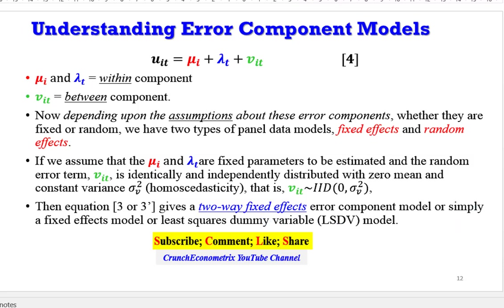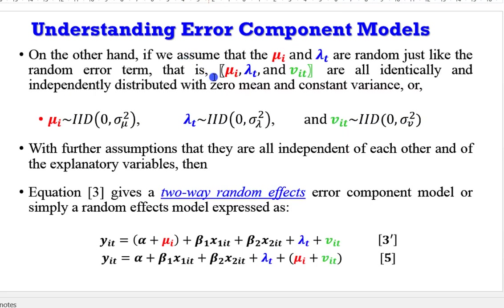On the other hand, if we assume that all these compositions of the error term are random, then that means we are going to have a two-way random effects error components model. And equation 3 prime, which I showed you before, can now be rewritten as equation 5, whereby the individual differences now in the model is now added in composition to the random error term, because of the assumption that is being made about the disturbance uit. So, given the assumption of the random error term, will determine whether you are going to estimate a fixed effects model or a random effects model.